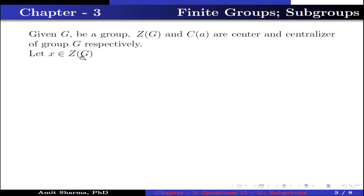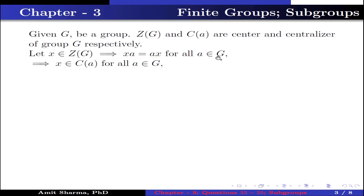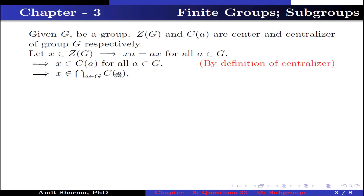Let x ∈ Z(G). This implies xA = Ax for all A ∈ G. This implies x ∈ C(A) for all A ∈ G, by the definition of centralizer. This implies x belongs to the intersection over A ∈ G of C(A). Therefore Z(G) is a subset of the intersection over A ∈ G of C(A).